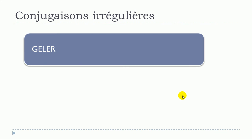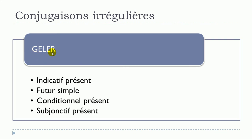So I wanted to take the verb geler, meaning 'to freeze'. Geler will actually be slightly modified, and it will concern the following tenses: indicatif présent, futur simple, conditionnel présent, and then subjonctif présent. For all the other tenses, geler will be conjugated like the other verbs from this first group.